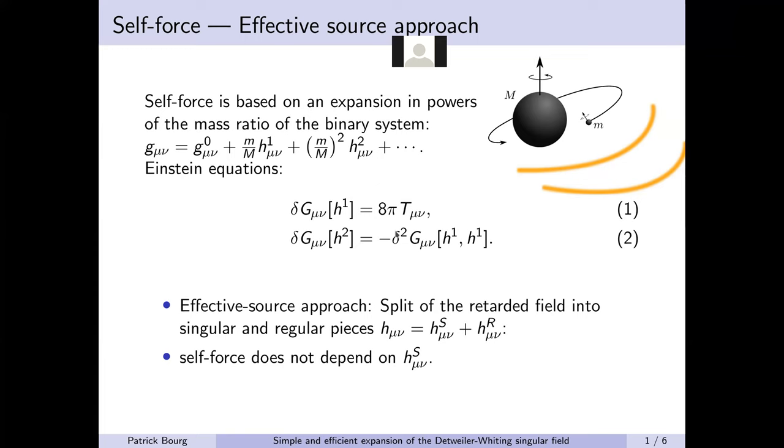The energy momentum tensor contains Dirac delta functions. One of the leading methods to deal with this is through what's called the effective source approach, where the full retarded field is split into two pieces, the singular and the regular pieces.